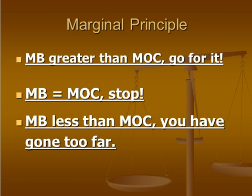Broken down a little more succinctly here: if marginal benefit is greater than marginal opportunity cost, go for it. Marginal benefit equals the marginal opportunity cost, we should stop. Because if the marginal benefit then gets less than the marginal opportunity cost, we've gone too far.